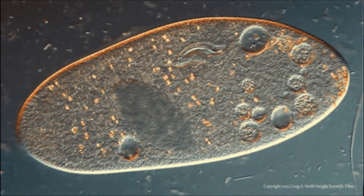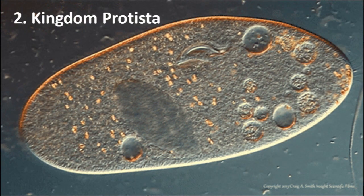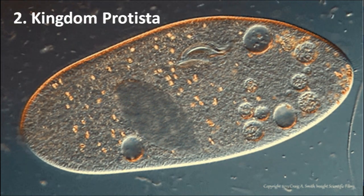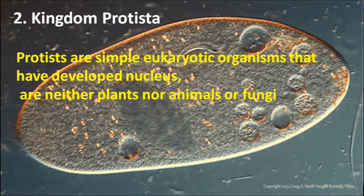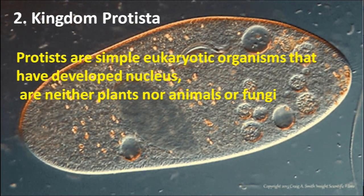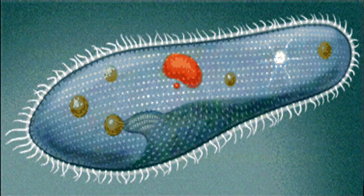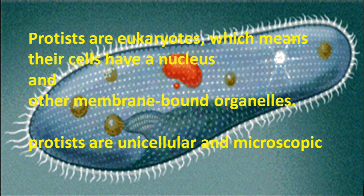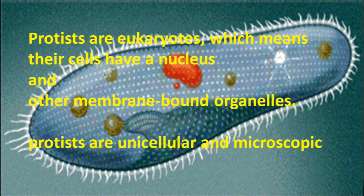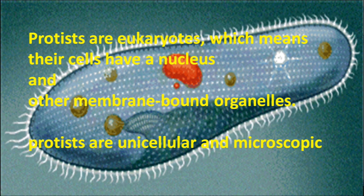The second kingdom is Protista. Protists are simple eukaryotic organisms that have a developed nucleus. Protists are neither plants, animals, nor fungi. They are eukaryotes, meaning their cells have a nucleus and other membrane-bounded organelles. Protists are unicellular and microscopic.